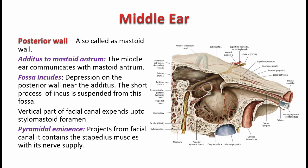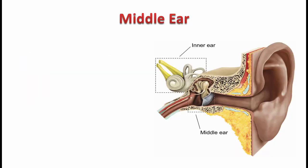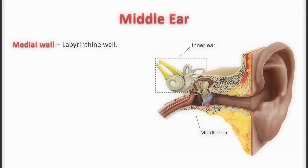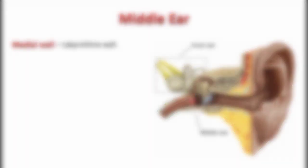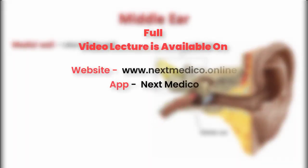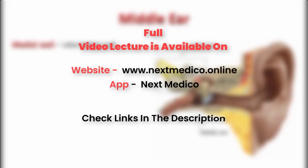Next we move to the medial wall, also called the labyrinthine wall. The lateral wall, seen in the previous class, is closed by the tympanic membrane. The anterior wall communicates with the auditory tube. The medial wall is called the labyrinthine wall because it is intimately related to the internal ear, which is mainly formed by the bony labyrinth.